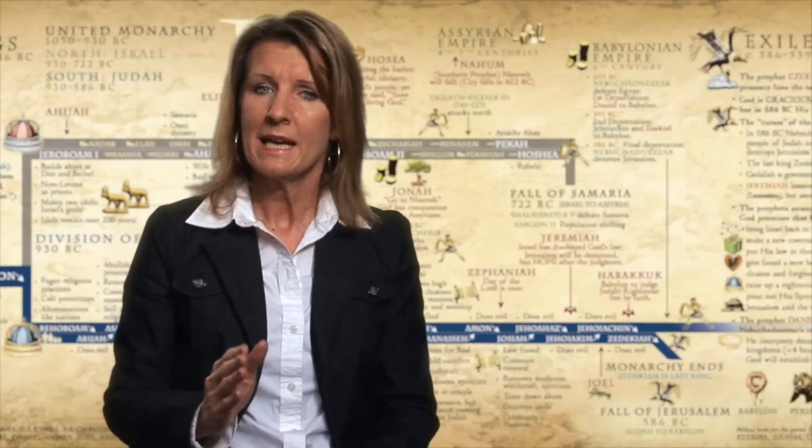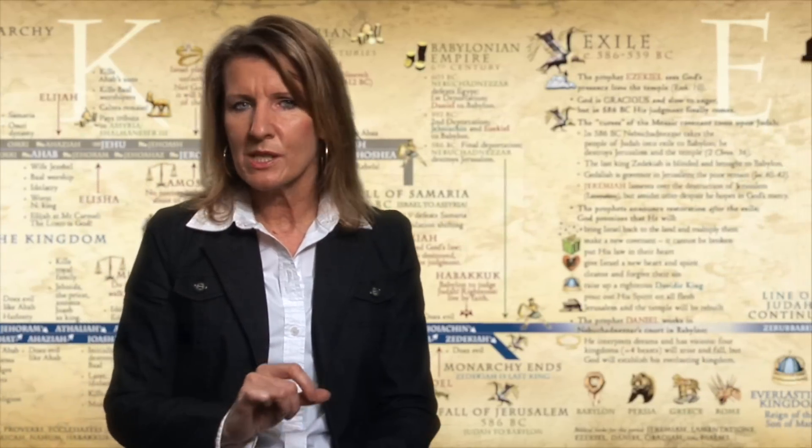S is for Sinai, which includes the giving of the law, the Ten Commandments and entrance into the land. K is for kings, kings such as David and Solomon, the Davidic covenant and the building of the temple in Jerusalem. E stands for exile, when Jerusalem is destroyed and God's people are brought to Babylon. T stands for temple, when God's people return to Jerusalem and rebuild the temple.